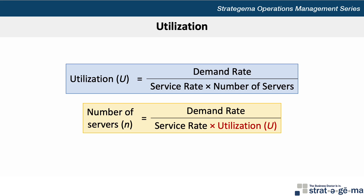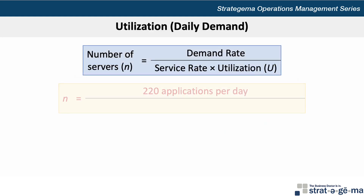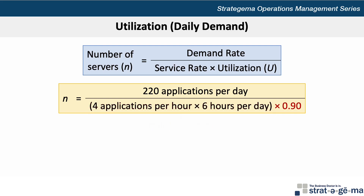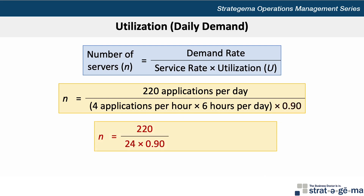Now we can proceed with calculating the number of officers required based on daily demand. N equals 220 applications per day divided by 4 applications times 6 hours per day — this is the daily service rate — multiplied by the 90% utilization rate or 0.9. This works out to 220 divided by 24 times 0.9, giving us 10.19, or 11 loan officers.